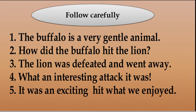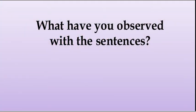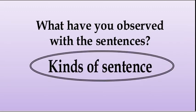So there are five sentences. Can you say what is the name of each sentence? Number one: The buffalo is a very gentle animal. Number two: How did the buffalo hit the lion? Number three: The lion was defeated and went away. Number four: What an interesting attack it was. Number five: It was an exciting hit. There are various kinds of sentences.